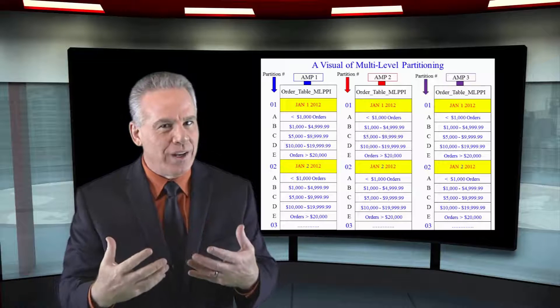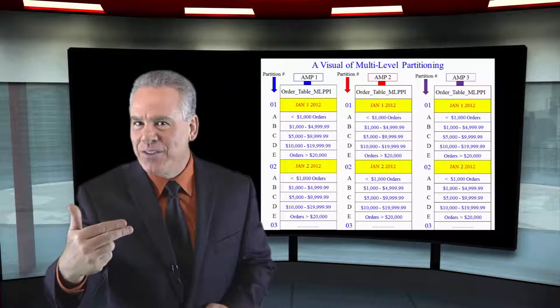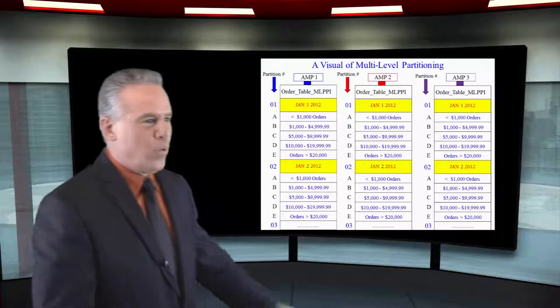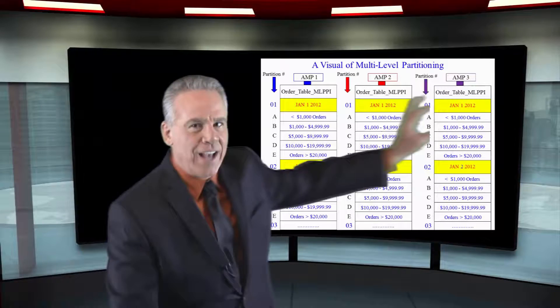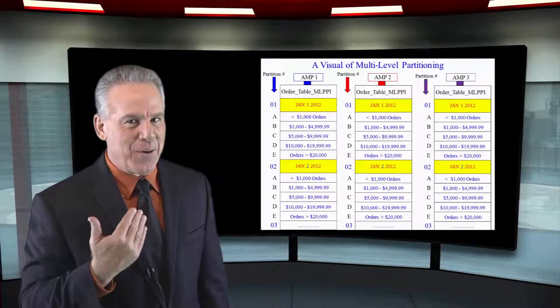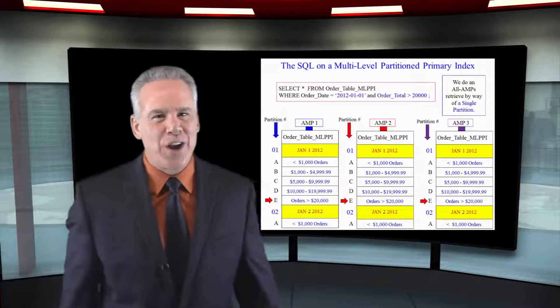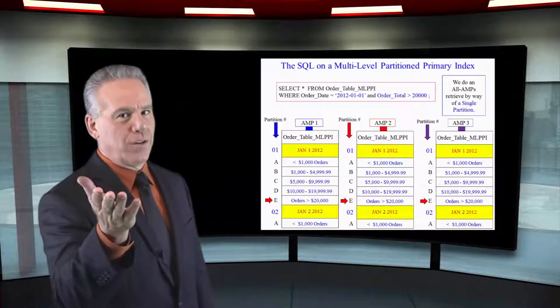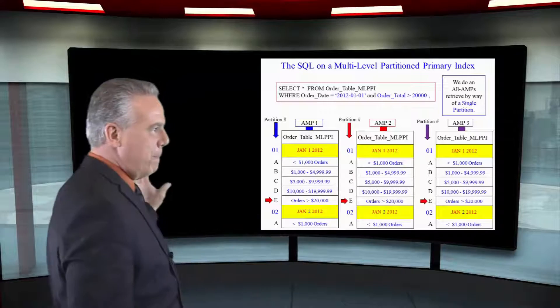That's exactly how I want you to see this data. And imagine if we just wanted orders less than 1000 on January 1st, one slice across all those amps and that data is coming back very quickly. I want to see all orders that happened on January 1st that were over $20,000. Bingo!